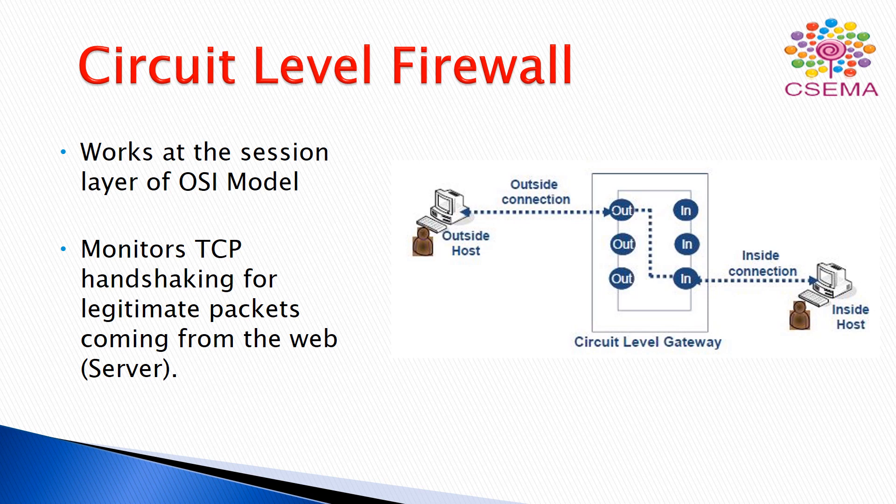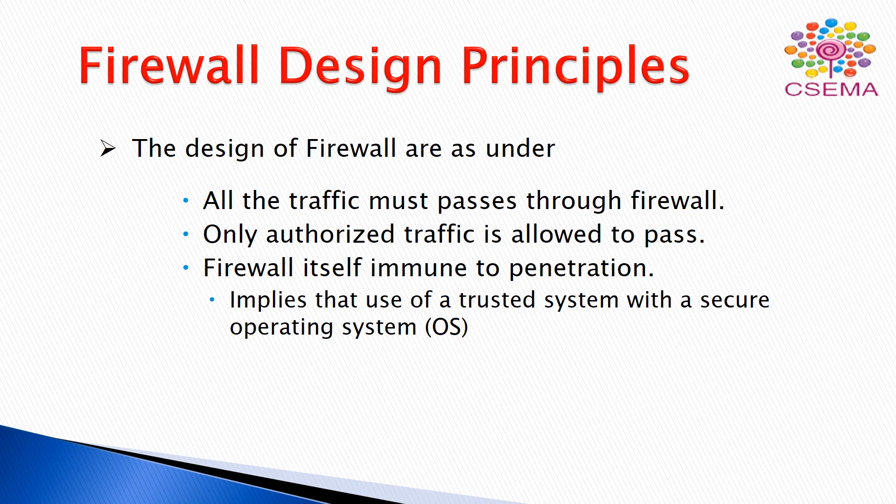The fourth is the hybrid firewall, which can be defined as a combination of two or more of the other three firewalls — the application level firewall, circuit level firewall, and packet filtering firewall. When we combine two or more firewalls, we get a hybrid firewall. There are also design principles that should be followed when designing a firewall to provide a better and more effective result.